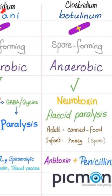Now let's compare among these four: Clostridium tetanii, Clostridium botulinum, Clostridium difficile, and Clostridium perfringens. All of them are gram-positive, all of them are rods or bacilli, all of them are spore-forming, and all of them are anaerobic. Most of them are motile — only one is immotile: Clostridium perfringens.